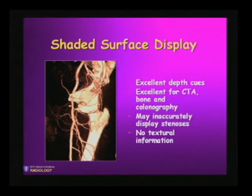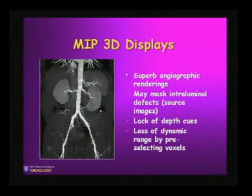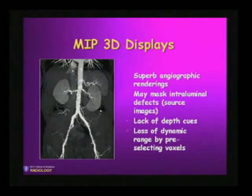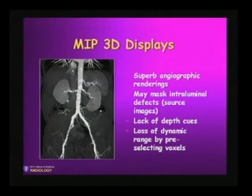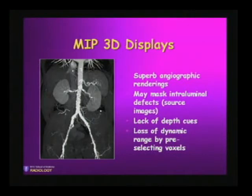One of our residents, Anuj Tolya, actually created this one night in a pelvic trauma case and was able to show a small pseudoaneurysm of the femoral artery while on call. The MIP 3D displays are great for looking at angiographic renderings — they project the brightest pixel along the ray of sight, and therefore they're great for vascular displays. They may mask intraluminal defects; Elliot showed you examples of how you can lose thrombi and stenoses within a MIP. They have no depth cues, so you get sort of an optical illusion — you don't really know where these vessels are in relation to the data set.